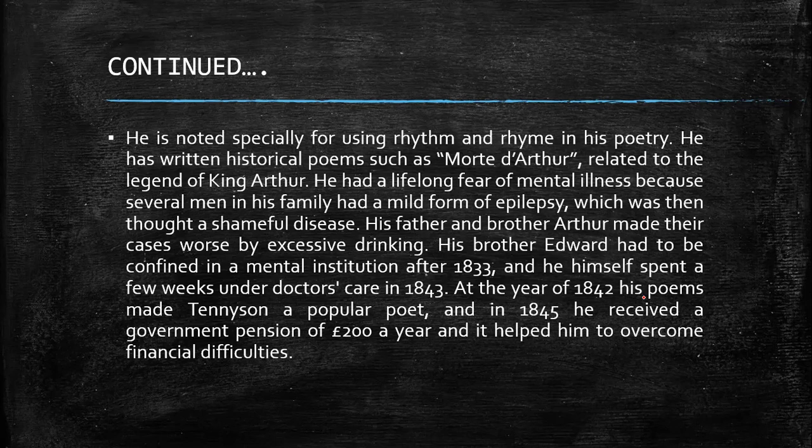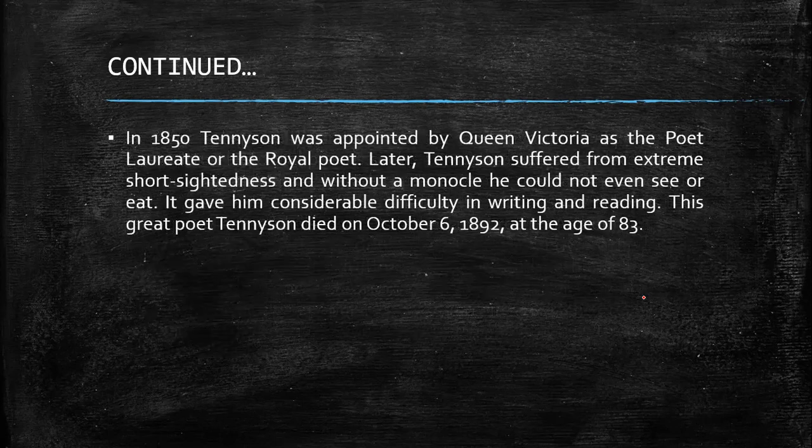His father and brother Arthur made their cases worse by excessive drinking, and his brother Edward had to be confined in a mental institution after 1833. In 1842, his poems made Tennyson a popular poet. In 1845, he received a government pension of 200 pounds a year, which helped him overcome many financial difficulties. In 1850, Tennyson was appointed by Queen Victoria as the poet laureate, or the royal poet.